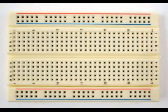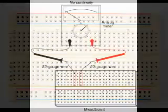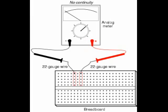This breadboard or protoboard has two common connection rows along the top and two common connection rows along the bottom for positive and negative power supply connections. Conversely, points within a row of five holes vertically in this illustration are not electrically common because there is no continuity between them. Continuity describes what is between the points of contact, while commonality describes how the points themselves relate to each other.